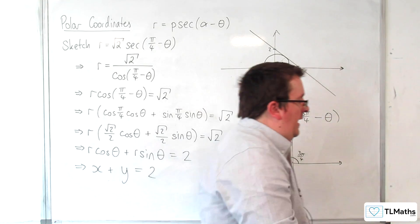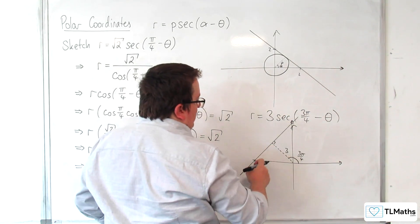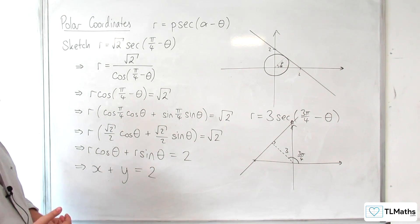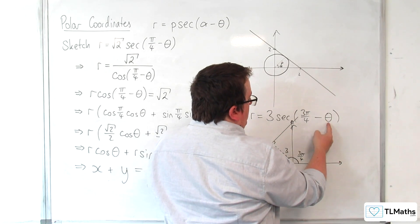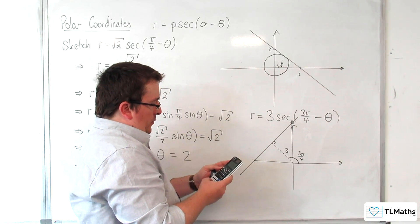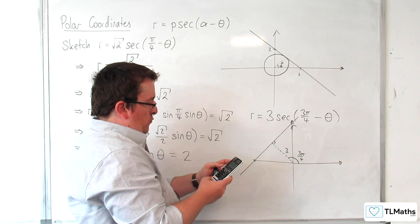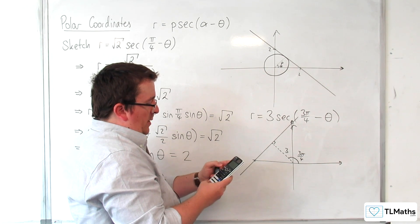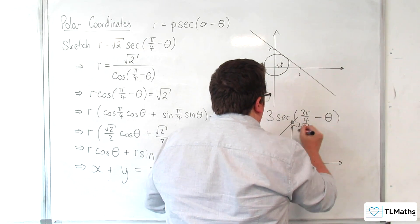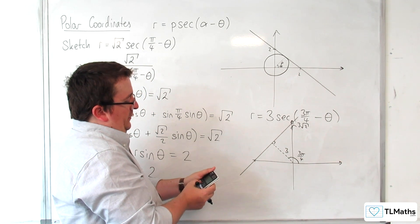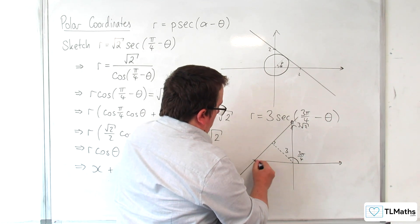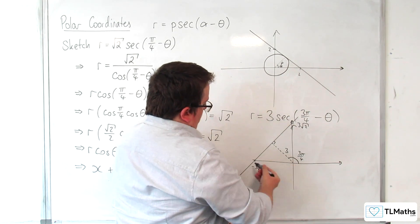Of course, you might be interested in where that then crosses the x and y axes. Well, in order to do that, we could look at when theta is pi over 2. So I can substitute that in. So I'd have 3 over cosine of 3 pi over 4 take away pi over 2. And we get 3 root 2. So that's 3 root 2. And if I put in theta as pi, we get 3 root 2 again. So that's minus 3 root 2, because of distance 3 root 2.